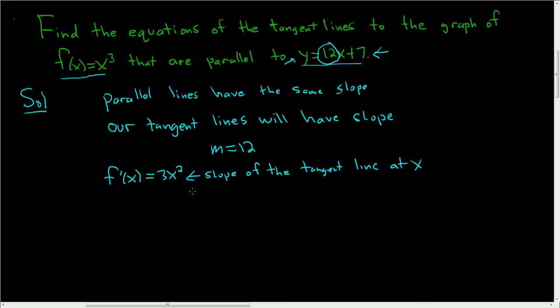But we know that the slope of our tangent lines is 12. So we can set 3x² = 12. Dividing both sides by 3 gives us x² = 4. Taking the square root, we get x = ±2. So now that we have the x values, we just need to find the y values.